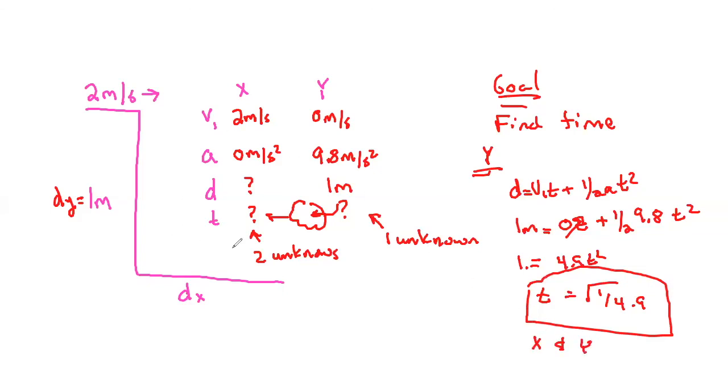So now I know T. And I can find out exactly how far that object went by saying D equals VIT plus 1 half A T squared. I want to know how far it went. It started with 2 and we have a square root of 1 divided by 4.9. This term, because the A is 0, this whole term goes to 0. That's wonderful. And you'll be able to solve for that.